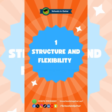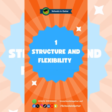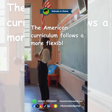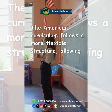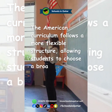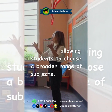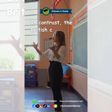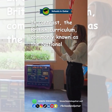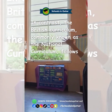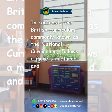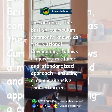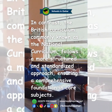1. Structure and Flexibility. The American curriculum follows a more flexible structure, allowing students to choose a broader range of subjects. In contrast, the British curriculum, commonly known as the National Curriculum, follows a more structured and standardized approach, ensuring a comprehensive foundation in core subjects.